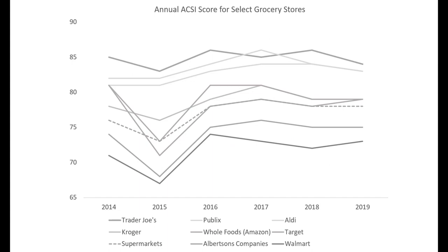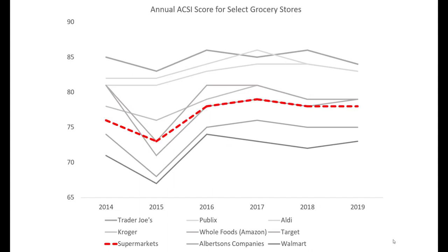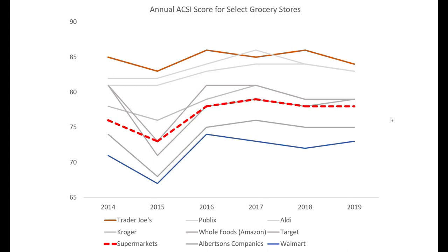Let's take a look at ACSI scores over time for a select number of grocery stores. For the entire supermarket category, customer satisfaction has stayed relatively stable from 2014 to 2019, with a notable dip in 2015. The relative rank order for customer satisfaction doesn't vary much either — Trader Joe's typically remains the market leader and Walmart remains the market laggard. This shows that customer satisfaction is a relatively stable phenomenon across competitors in this space, though in other industries the ACSI shows much greater shifts in how brands compete to please their customers.